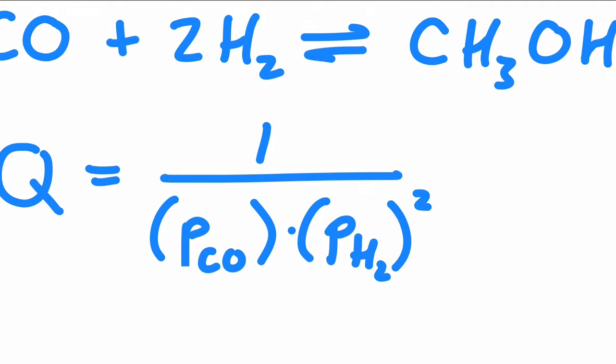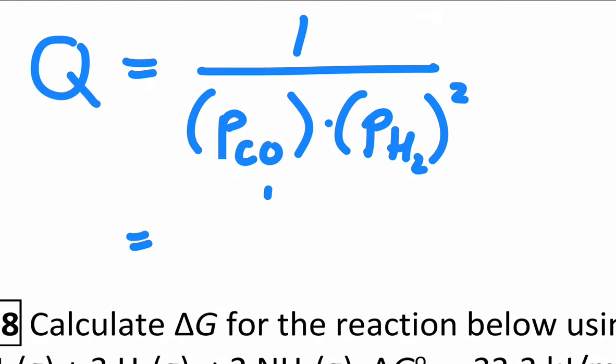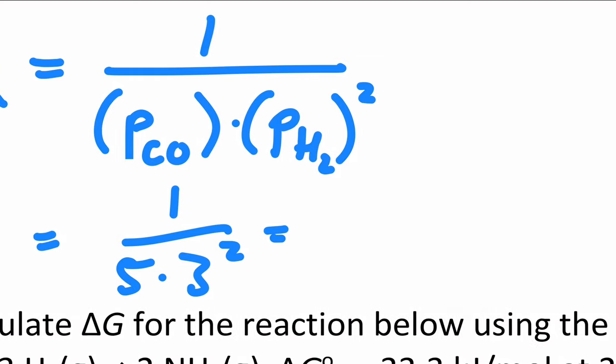So the expression would be the partial pressure of CO times the partial pressure of H2. Don't forget to square it because of its coefficient of two. And then if we actually just plug those numbers in, we get one over five times three squared, which if we write as a decimal is about 0.022.